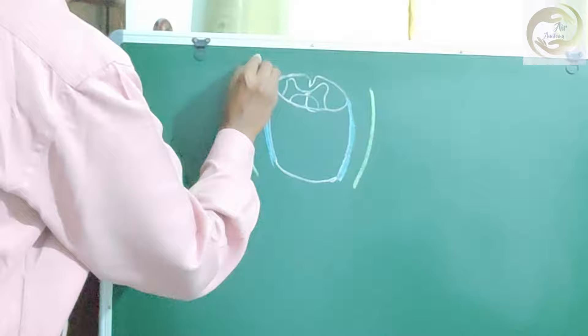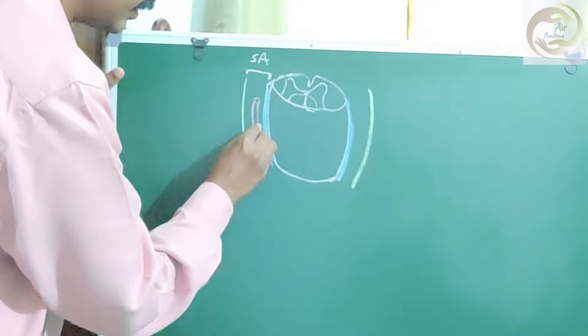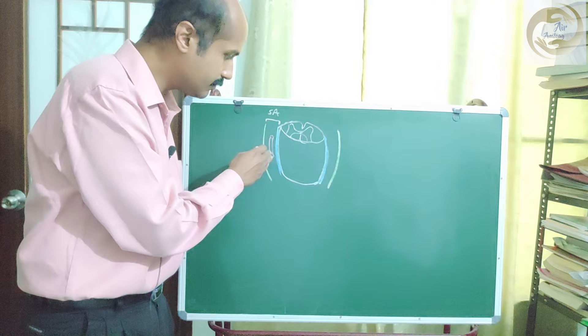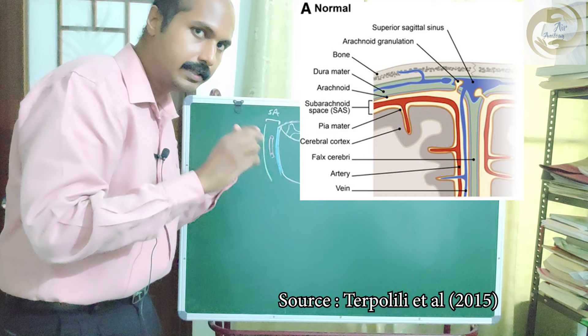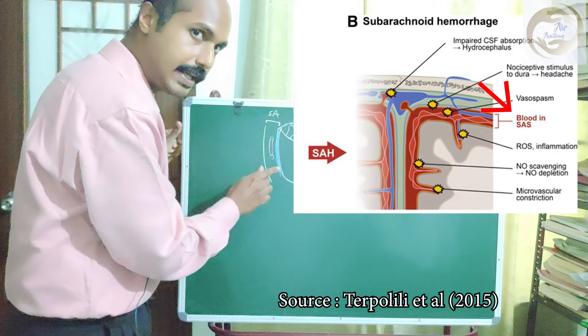Underneath the arachnoid, you have the subarachnoid space, which will be filled with CSF. Within the subarachnoid space, you have blood vessels that will be bathed within the CSF. This is the same format in the brain — the cerebral vessels will be in the subarachnoid space, which is why a subarachnoid hemorrhage will have bleeding going into the spaces where you have CSF.